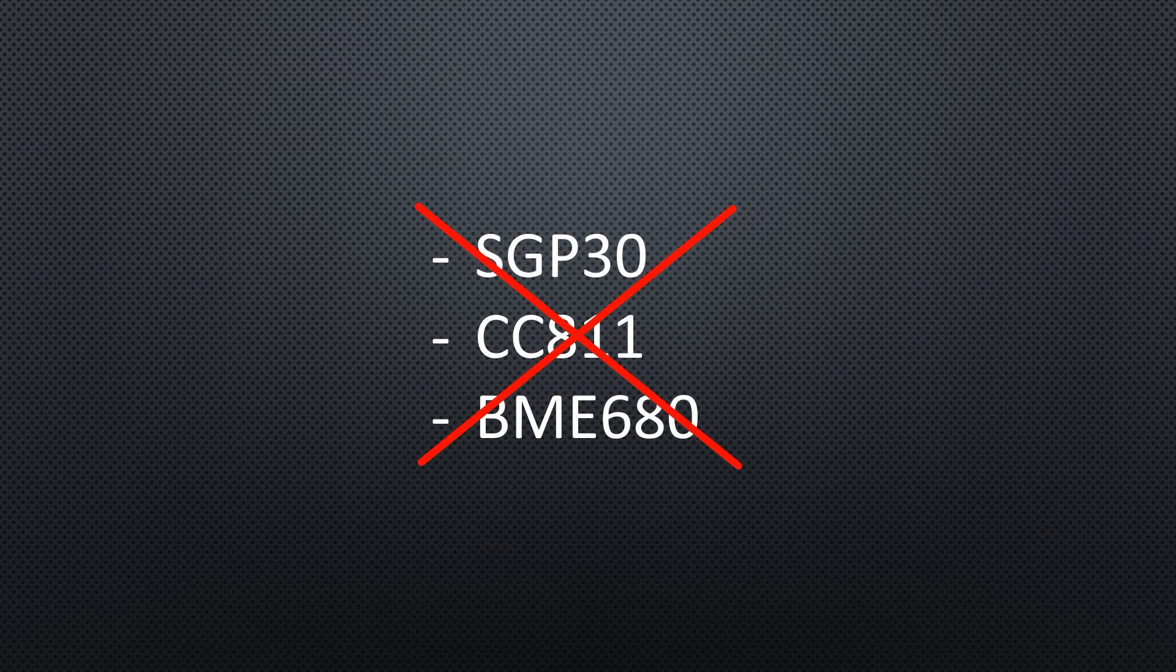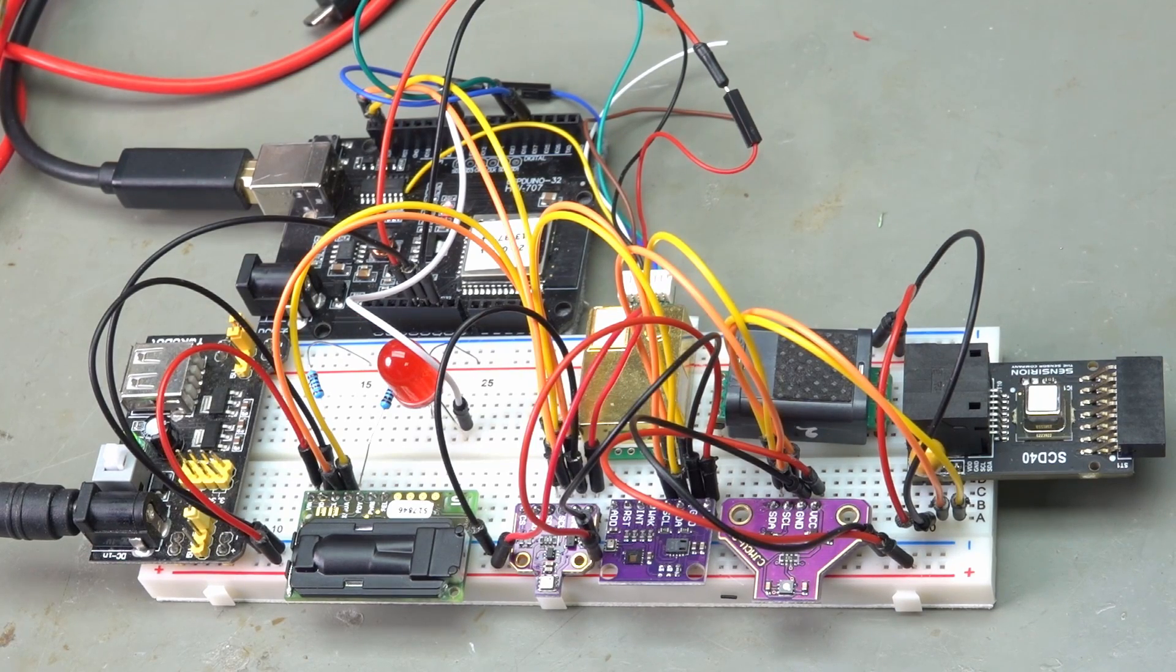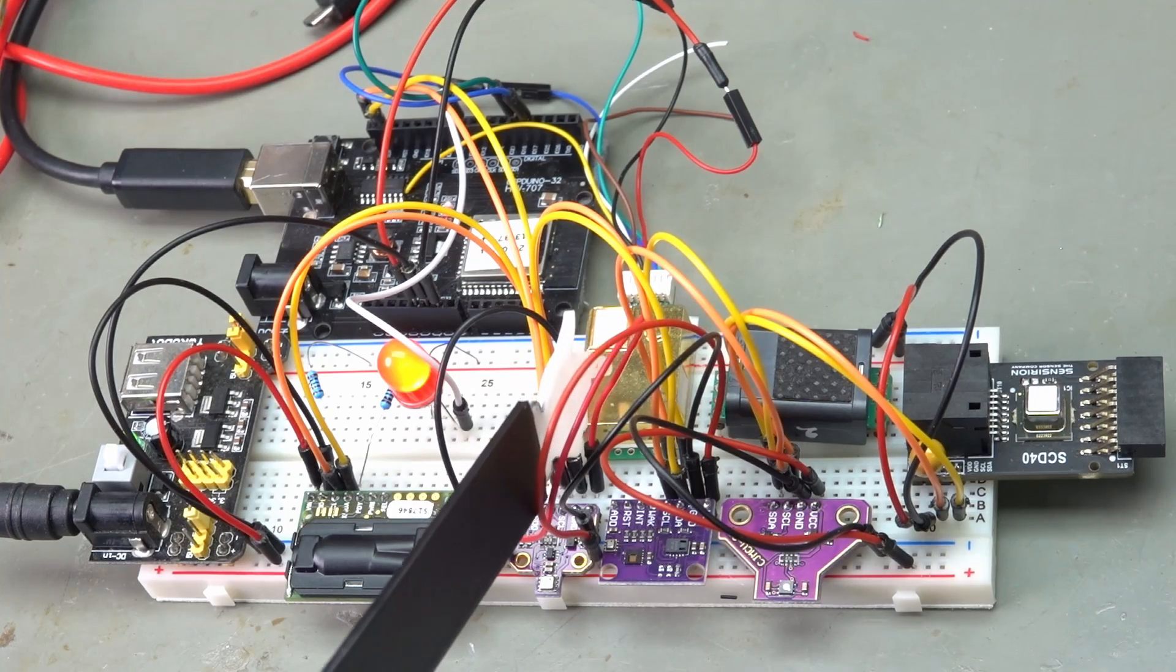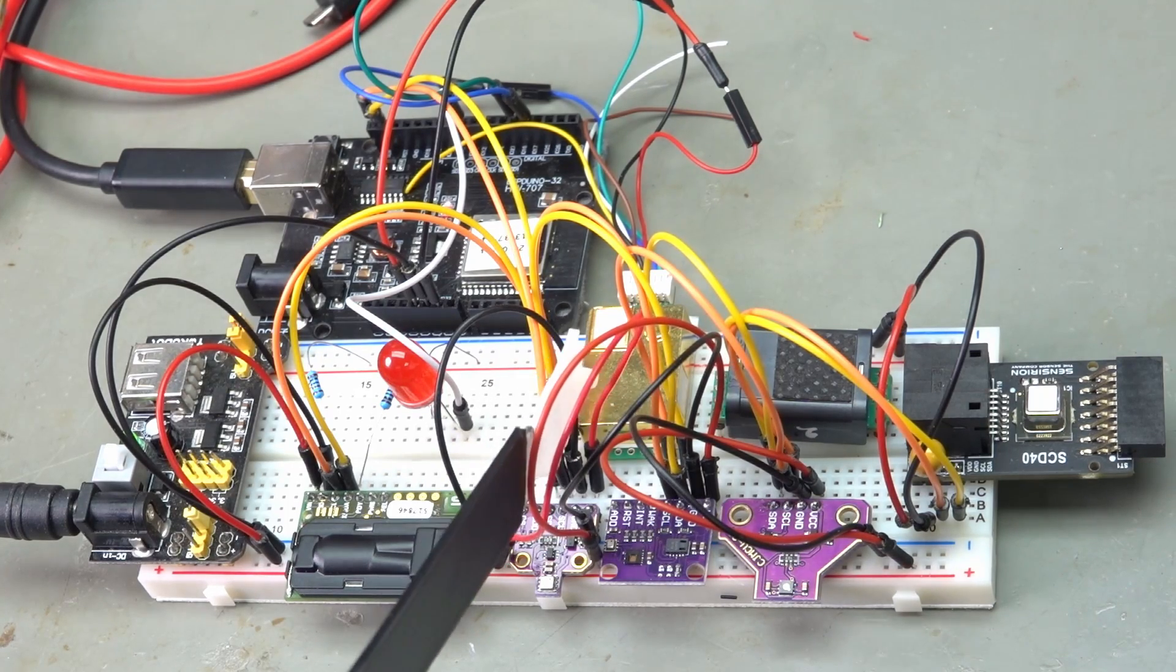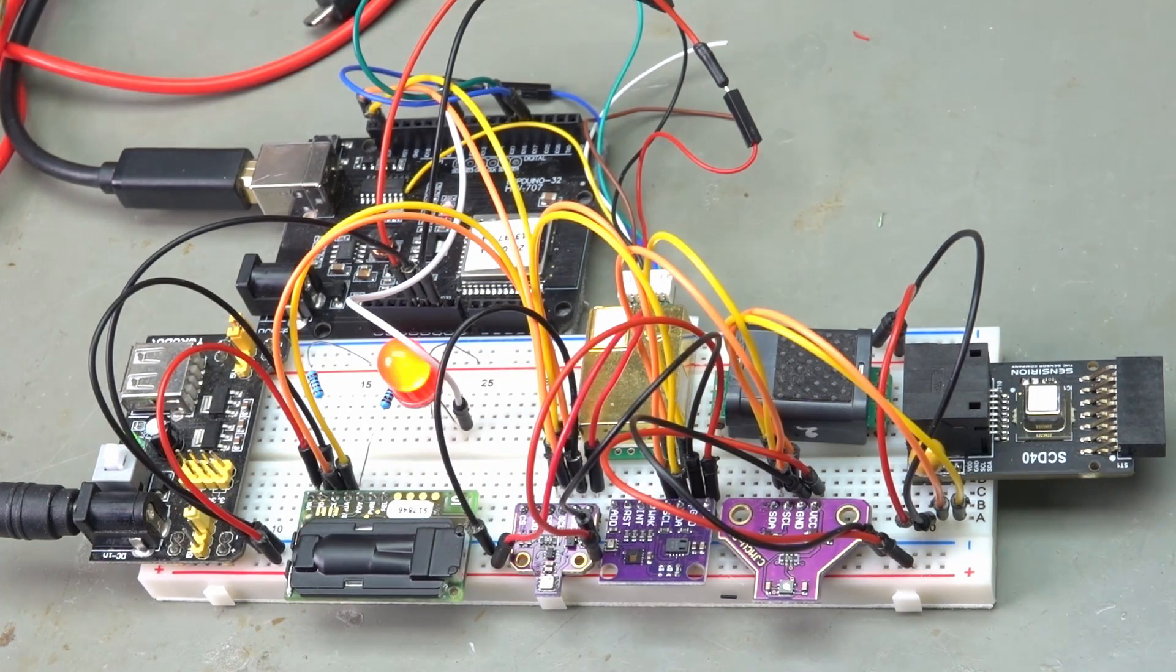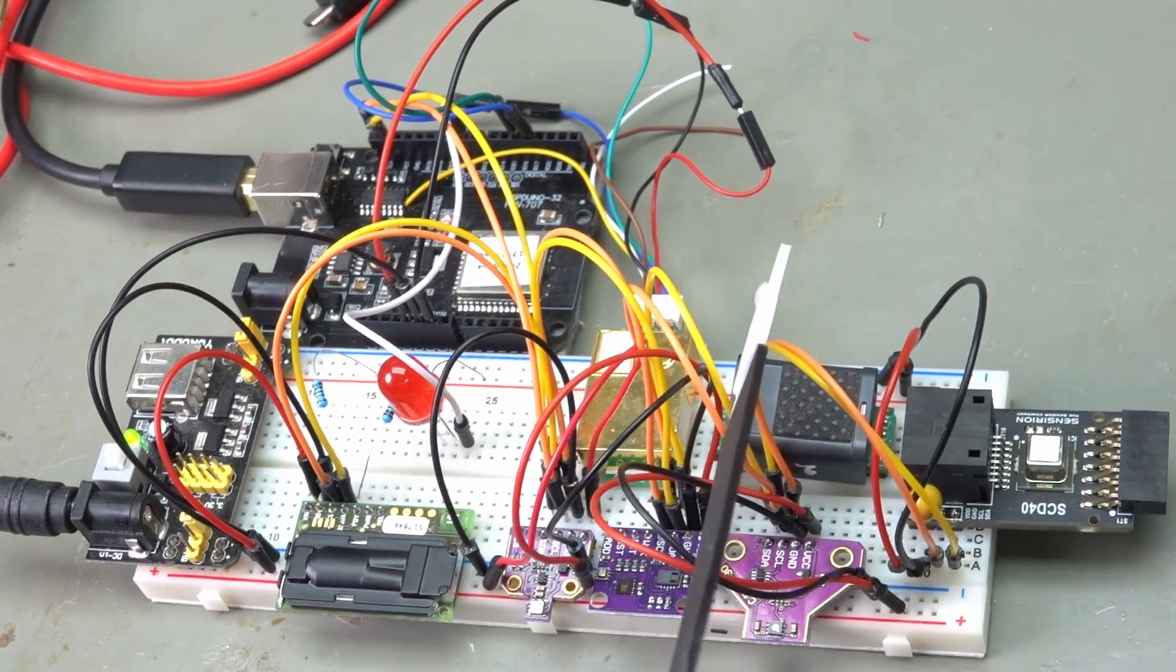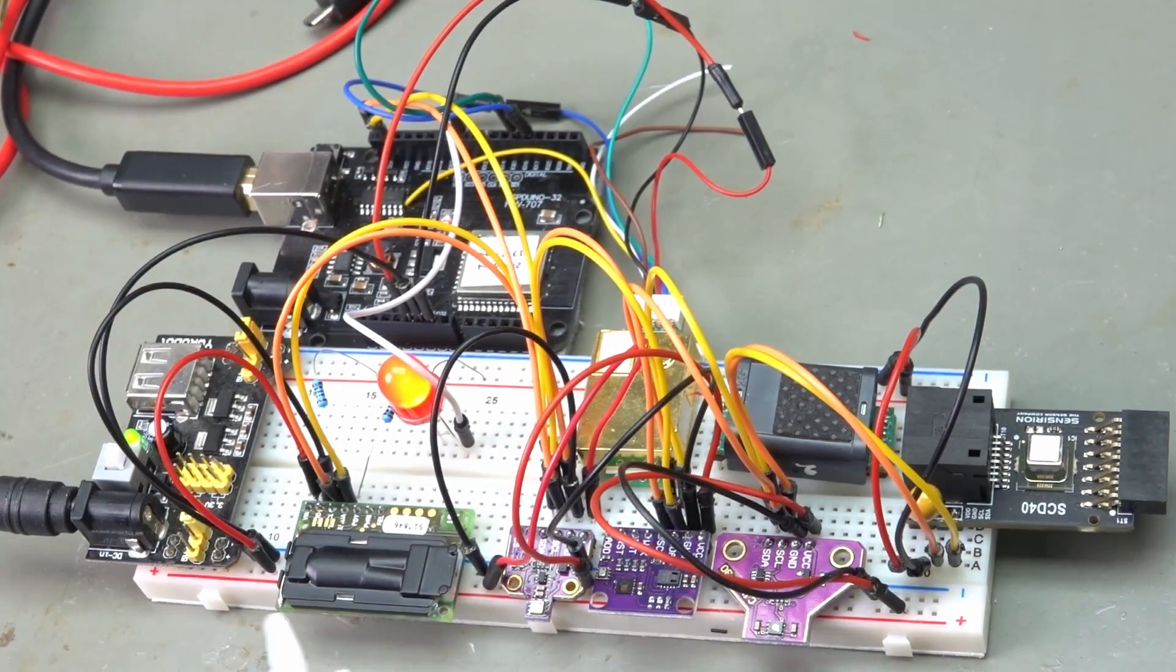Let's now focus on the CO2 sensors. I have the following selection. The cheapest is the Chinese MH-Z19. It has a serial connection and about the same size as the Sunrise sensor from Sensirion. The next is the SCD30 from Sensirion. The latter two have I2C connectors.